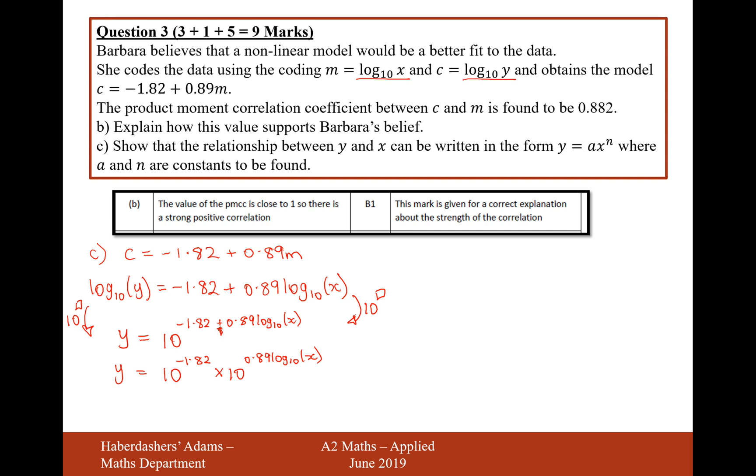So what we've done there is we've split up the rule of indices where if you've got two powers where they've got the same base and you're multiplying them, you add the indices. We've just done that process in reverse. What I'm now going to do is use the law of logarithms to move that 0.89 in as a power on the X. So it's going to be 10 to the power of minus 1.82 times 10 to the power of log base 10 of X to the power of 0.89.